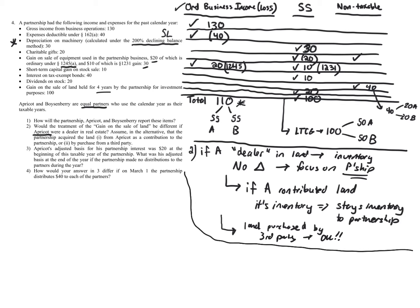Questions three and four focus on basis. Apricot's basis for his partnership interest was $20 at the beginning of the taxable year. What is his adjusted basis at the end of the year? This is relatively straightforward at a simple level. Section 705 of the Internal Revenue Code covers basis adjustments — the 700s is where we find the partnership provisions.